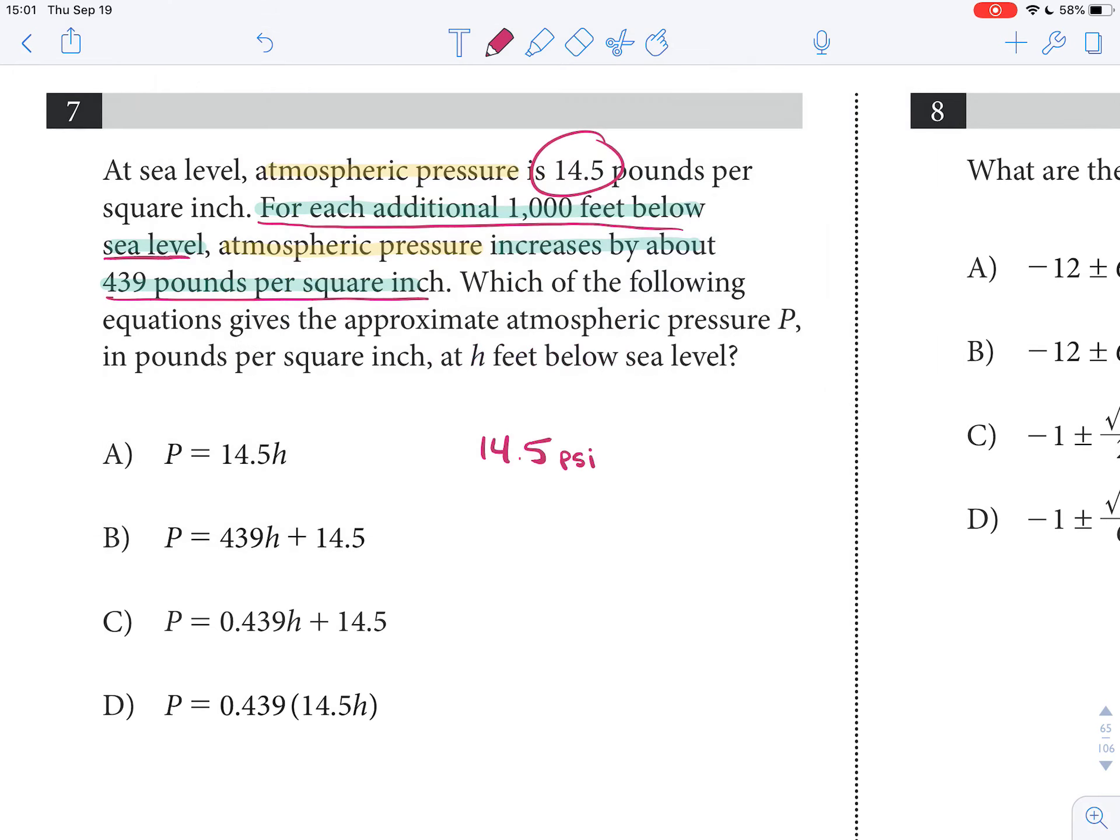So, the way that would get translated is that it's a slope, effectively, because we're saying that we're going to go plus 439 PSI for every 1,000 feet of depth, and that's an increase in depth.